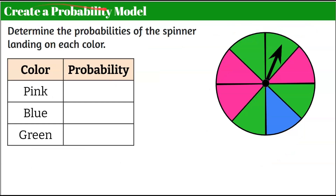Now we're going to create a probability model to determine the probabilities of landing on each color. We can see that we don't have a fair spinner here — we have a spinner divided into eight equal sections. However, we have three sections that are pink, four sections that are green, and one that is blue.